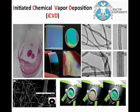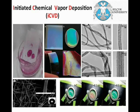In this tutorial we will introduce initiated chemical vapour deposition, or the iCVD process. iCVD is a kind of thin film deposition process. In this lecture, the basic principles of the iCVD process, the mechanism of polymerisation by iCVD, and the applications of iCVD will be explained briefly.